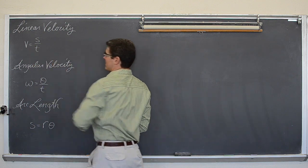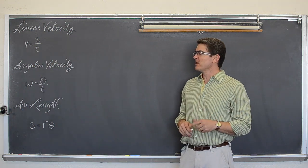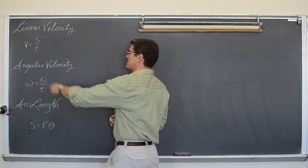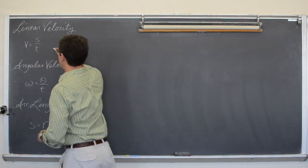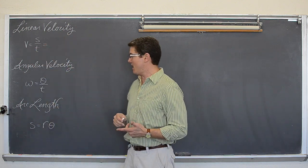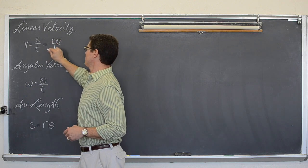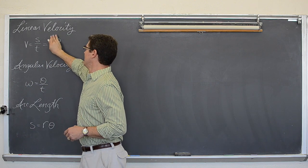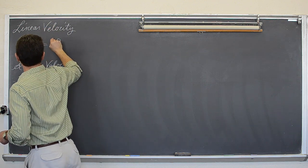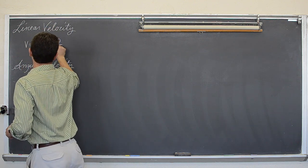So we have this standard formula in our textbook of V equals S/T. Now S stands for arc length. So depending on how the numbers are given to you in the problem you might see this as R θ over T. Or you may want to think of it that way. Depending on the way the variables are given to you.